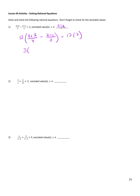That should clear my fractions. 12 over 4 reduces to 3, so I have 3 times x plus 2, minus — distributing this 12 to the term in parentheses — my 12 over 3 reduces to 4. Then 12 times 2 is 24. So now I just distribute and solve: 3x plus 6 minus 4x plus 4 equals 24.